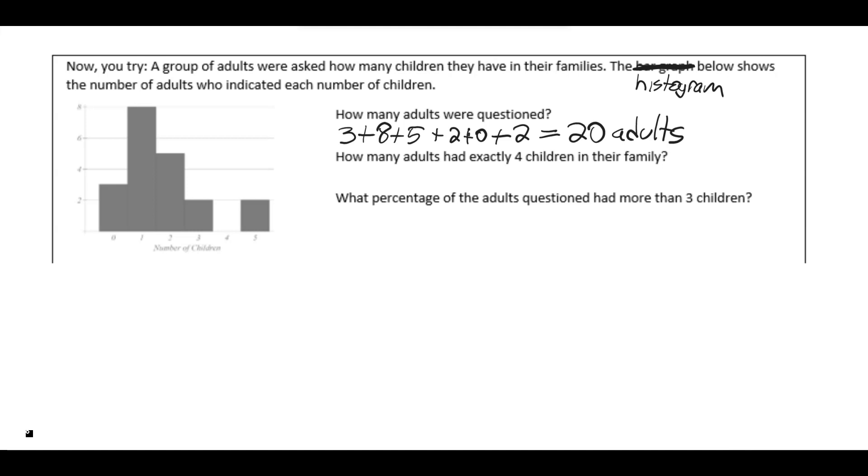All right, now, how many adults had exactly four children in their family? So we go to the four children, and we have a gap here. Unlike with bar charts where gaps are irrelevant, they don't mean anything, with histograms gaps are very important. That means that nobody answered having four children in their family. So our answer here is zero. No adults answered that they had exactly four children in their family.